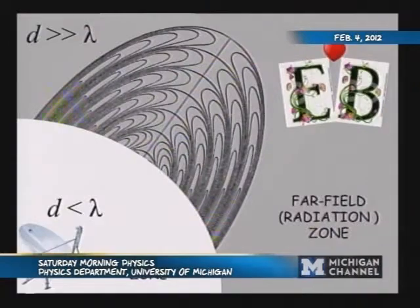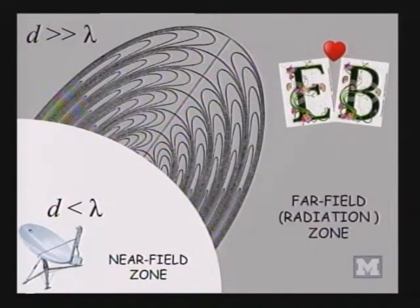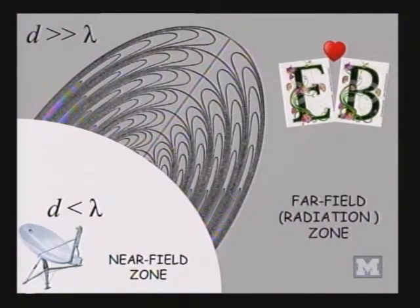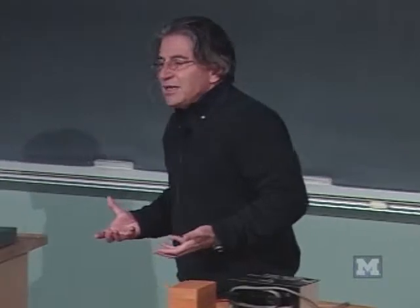In the far field zone — meaning a couple of wavelengths from the emitter — E and B love each other. They cannot live without each other: if there is an E, there is a B, and vice versa. You can't have one without the other. This is what we call the radiation zone. The word 'radiation' in science is not the same as in common language where it tends to mean nuclear radiation. This is electromagnetic radiation, and the light that comes to your eyes is electromagnetic radiation — we can live with it without worrying too much.